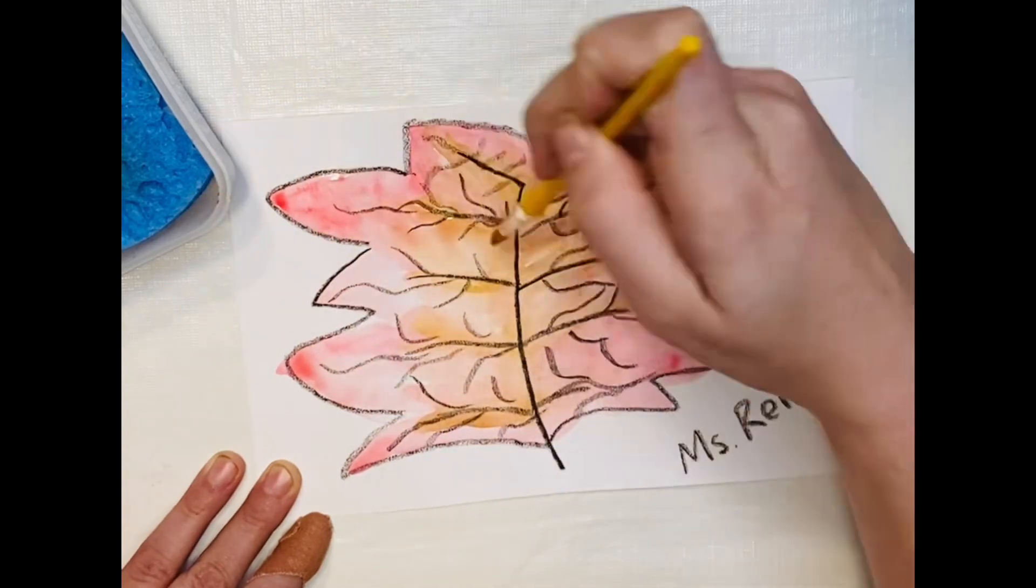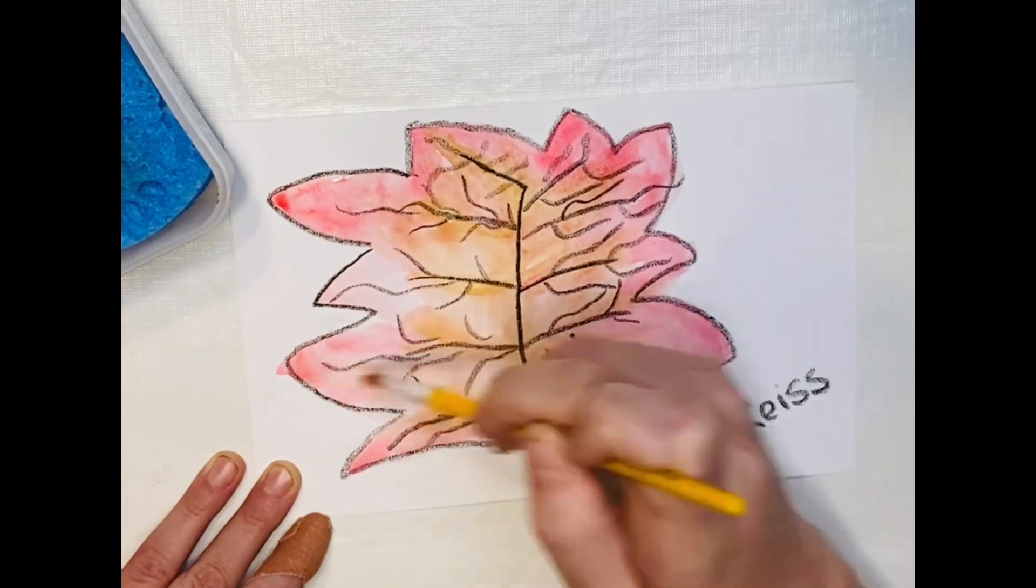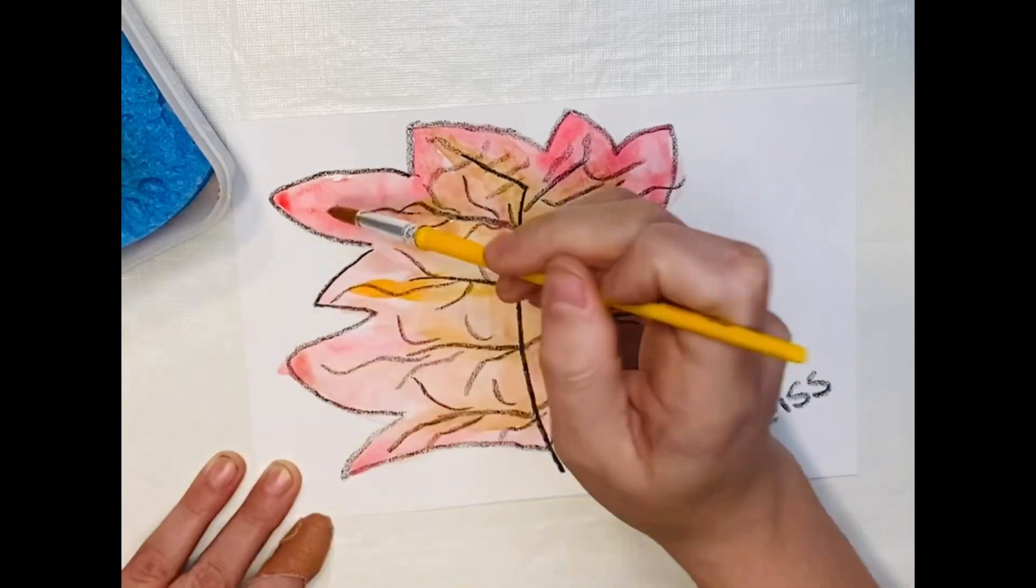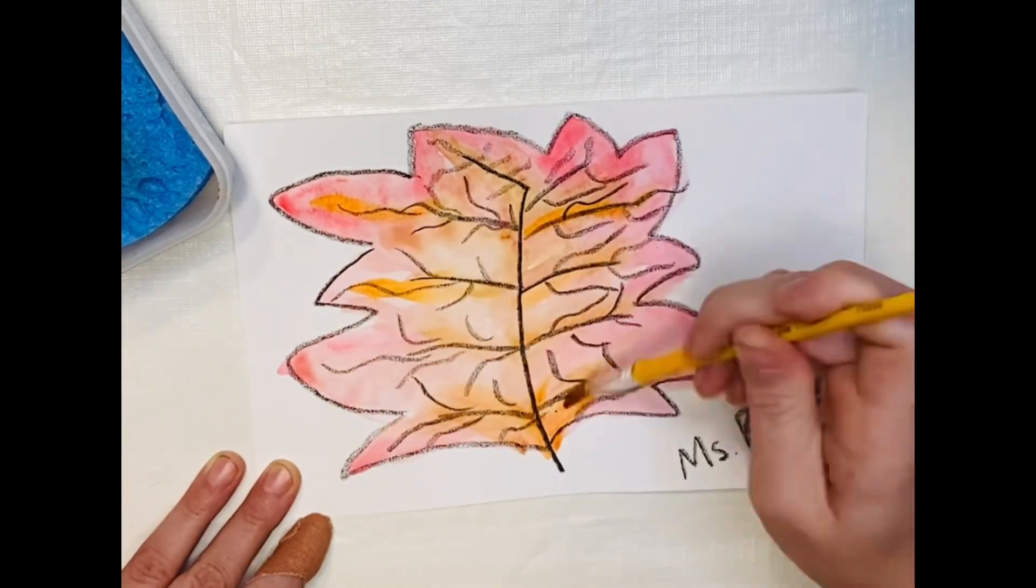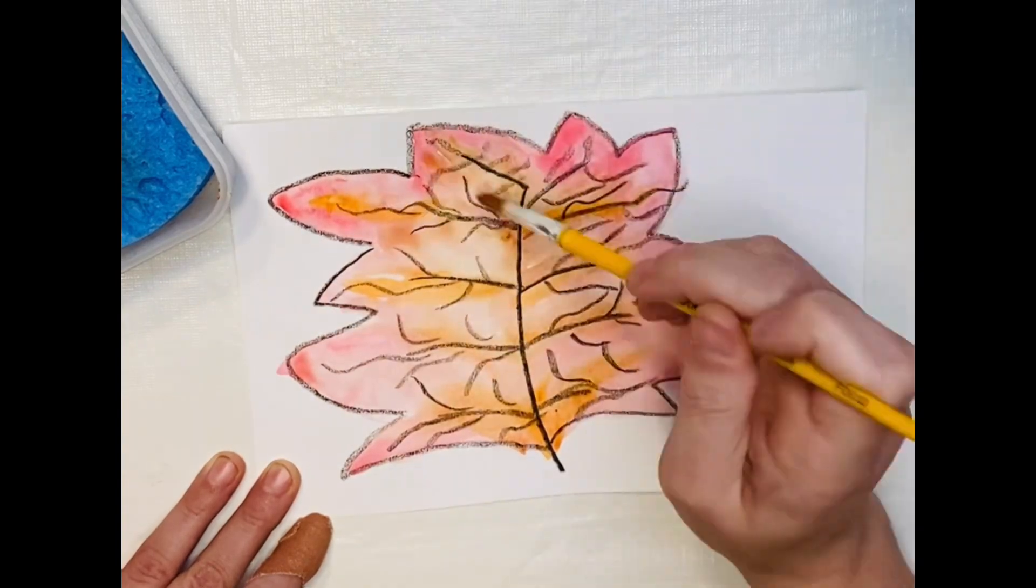We don't want to use too much water because we don't want to make our paint and our paper soggy so that it will take too long to dry. But again, we want to use enough water that the paint starts to blend together.